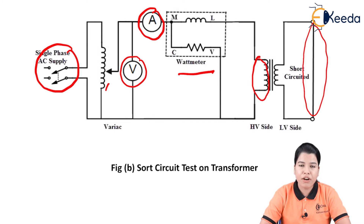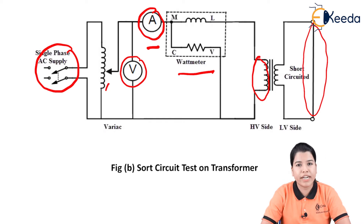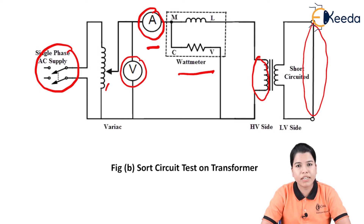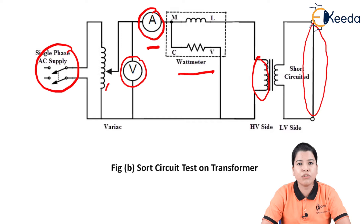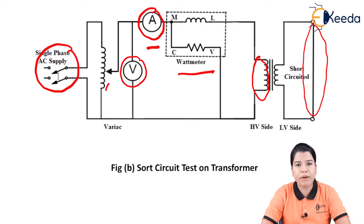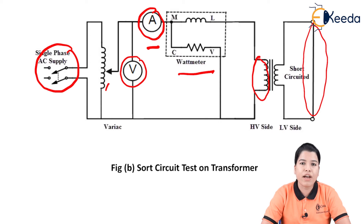The procedure for the short circuit test is: first find the rated primary current, then vary the voltage until the ammeter gives the rated current value. This voltage is very small compared to the rated primary voltage. Since the voltage is very low, the iron losses can be neglected. The transformer only shows copper loss, which is directly proportional to current.